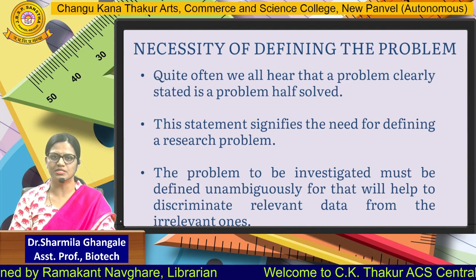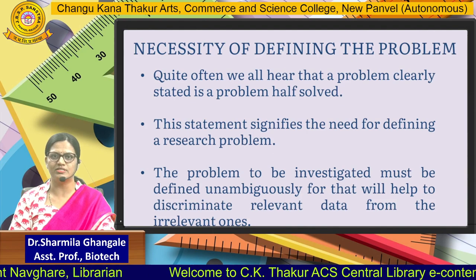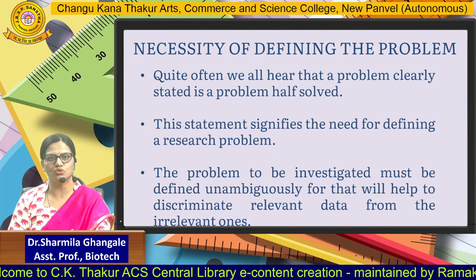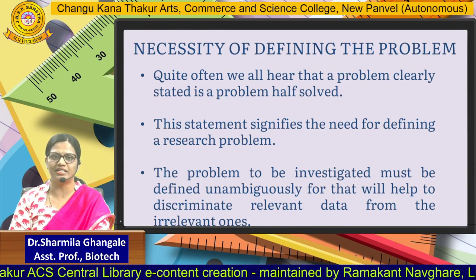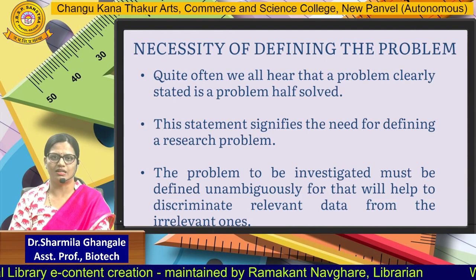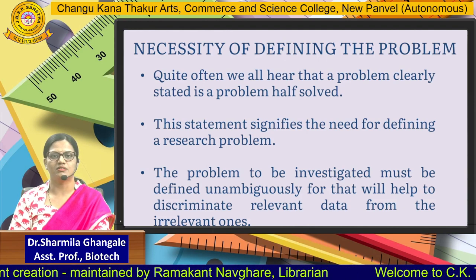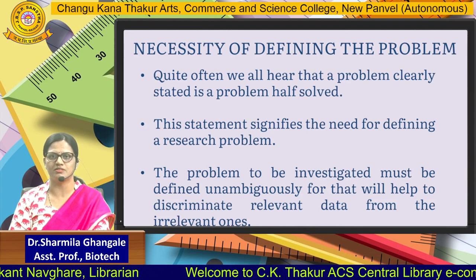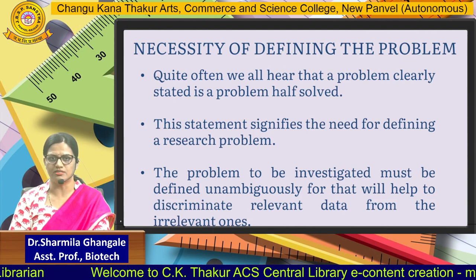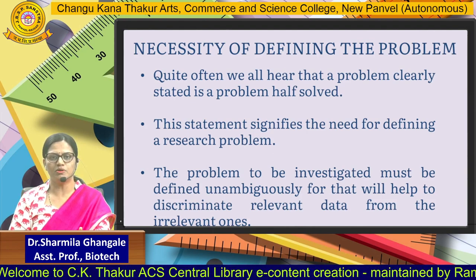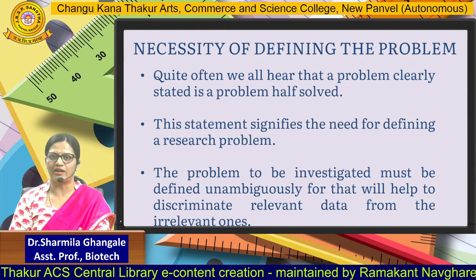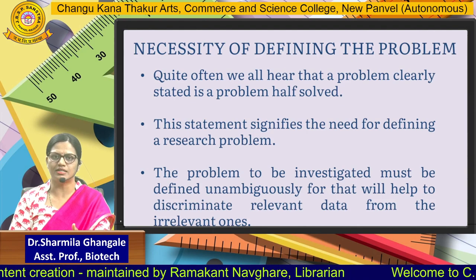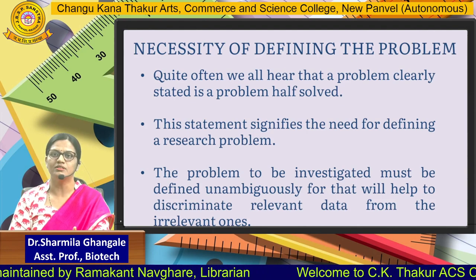The problem which is to be investigated must be defined unambiguously, as that will help discriminate the relevant data from the irrelevant ones. When the researcher knows the problem carefully, he can identify the relevant data for that particular problem. For example, in the last session we discussed working children in metropolitan cities — a survey-based research counting working children in metropolitan cities in the year 2020. The relevant data means selecting cities studying problems related to working children.